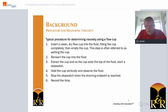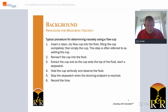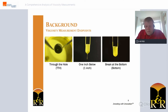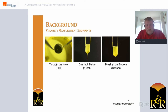Based on this procedure, there are three different endpoints that can be utilized. The first is through the hole — read by looking directly down through the cup, and when light can be seen through the hole, the test is complete. The second is one inch below — stop the stopwatch when the stream flowing out of the bottom of the cup is no longer steady one inch below the cup bottom. The third is break at the bottom — the test is complete when the stream makes a clean break at the bottom of the cup.